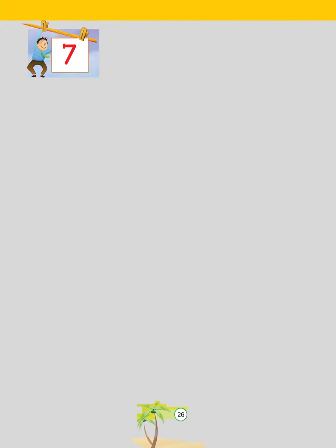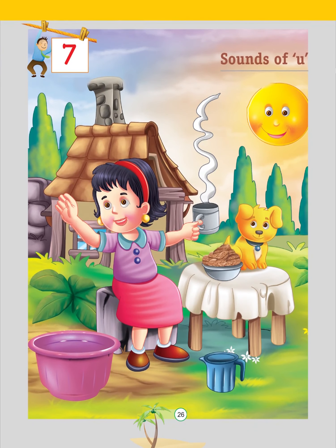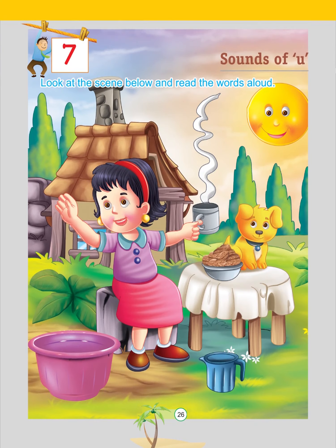Chapter 7: Sounds of U. Look at the scene below and read the words aloud: Sun, Hut, Cup, Pup, Nut, Tub, Mug.